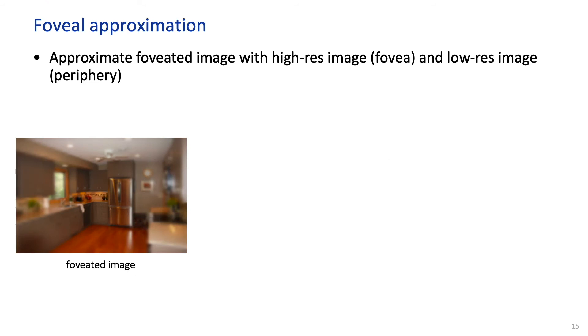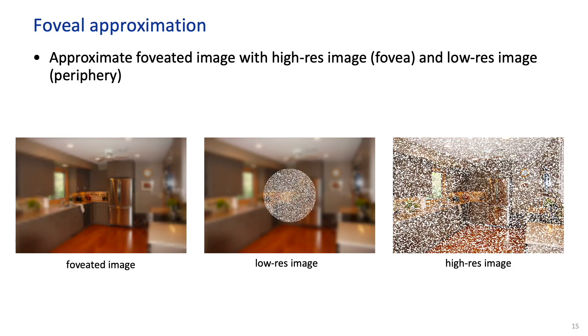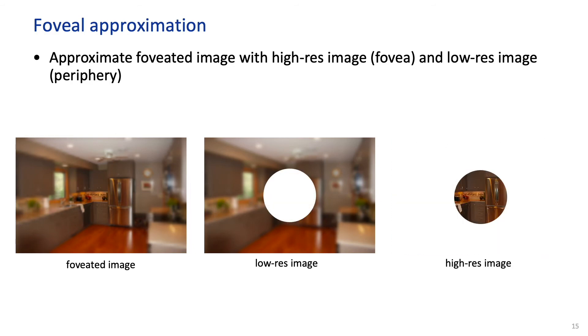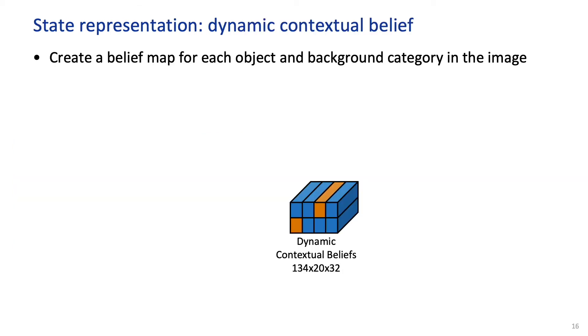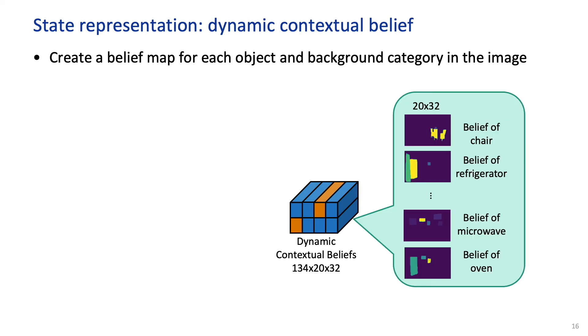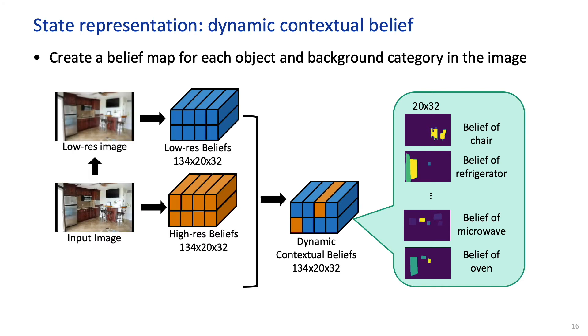For computational efficiency, we approximate the foveated image with high and low resolution images. At each fixation, we replace the low resolution image with the high resolution pixels at the fixated location. With the foveal approximation, we propose an interpretable state representation, which we call dynamic contextual belief. It is composed of belief maps of every object and background class in the input image, and is constructed by combining the belief maps from the low and high resolution input at all previous fixation locations. Finally, in order to learn the task-conditioned policies that we are looking for, we concatenate the dynamic contextual beliefs with the one-hot task embedding.